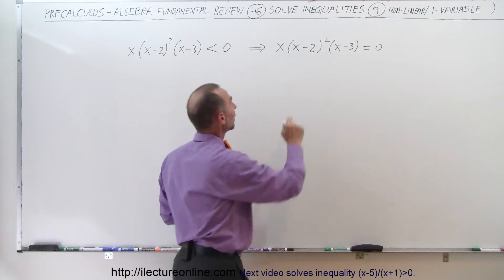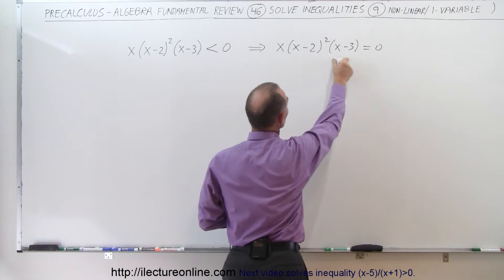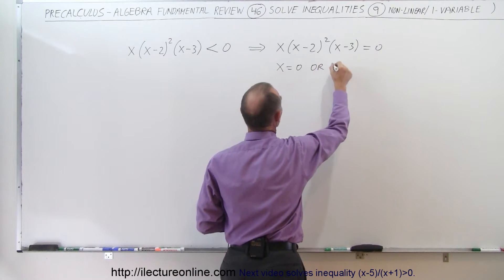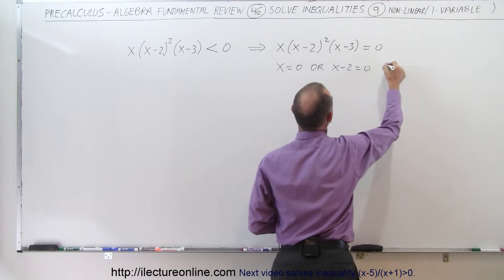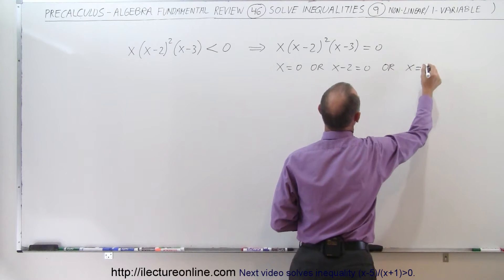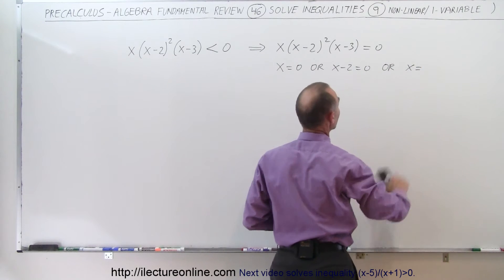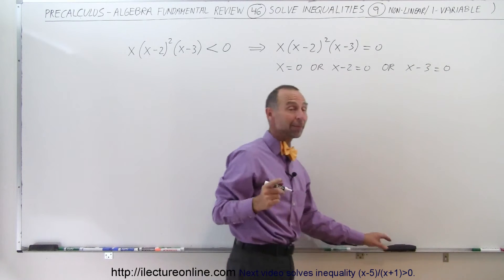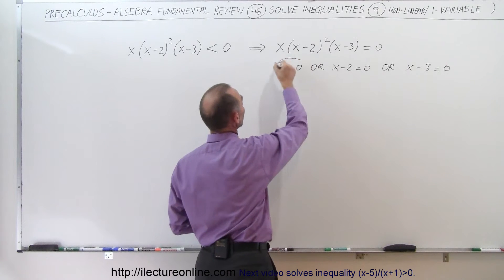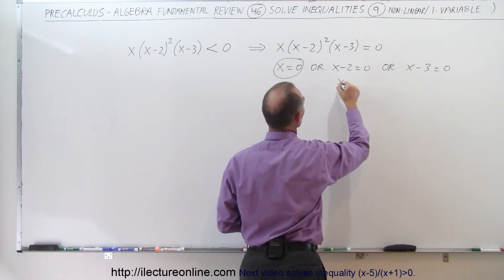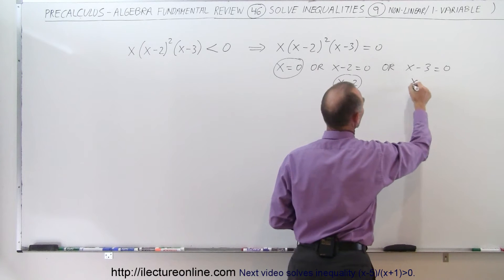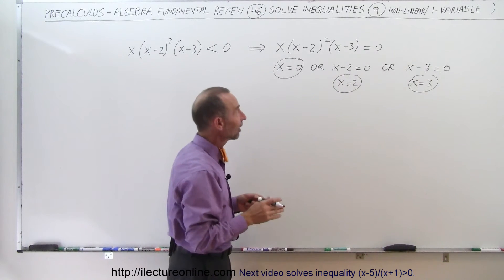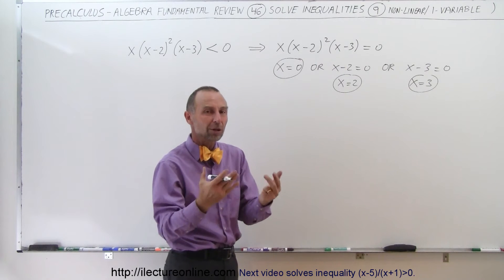We multiply the factors together to get zero, so either X must equal zero, or X minus 2 must equal zero, or X minus 3 must equal zero. Solving each: X equals zero is already one solution; from X minus 2 equals zero, X equals 2; and from X minus 3 equals zero, X equals 3. Those are the three values of X that make the left side equal to zero — the critical points.